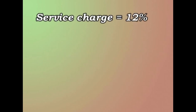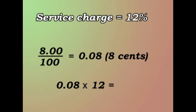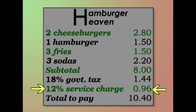Now the service charge — that's 12%. We do it the same way. We divide $8.00 by 100 to find out what 1% is, and we already know that's 0.08, in other words, 8 cents. But this time it's 12%, so we multiply 8 cents by 12. 8 times 12 is 96. So the service charge is 96 cents.